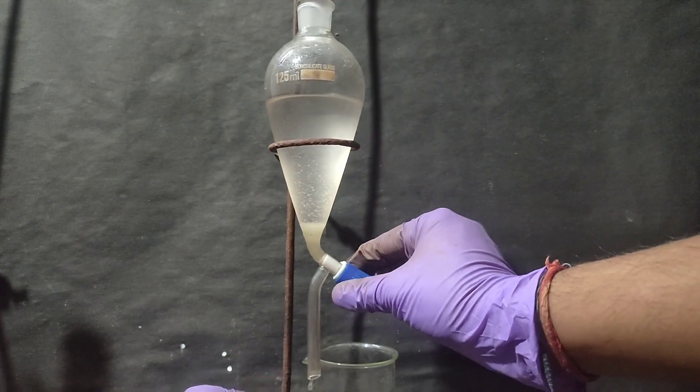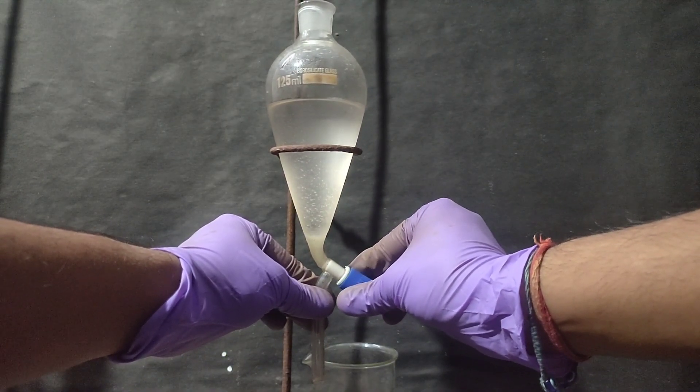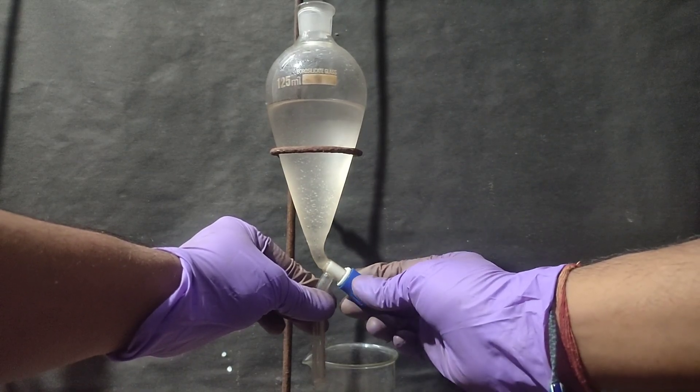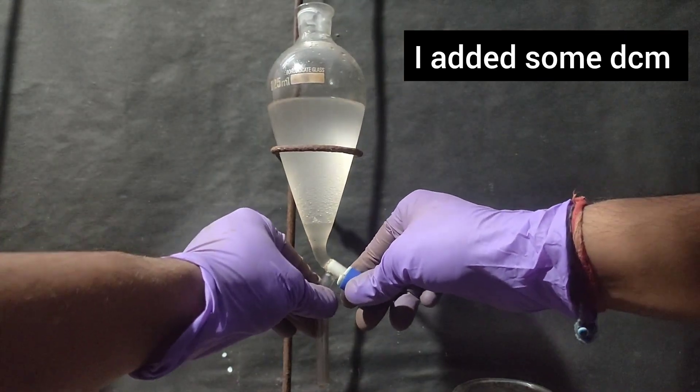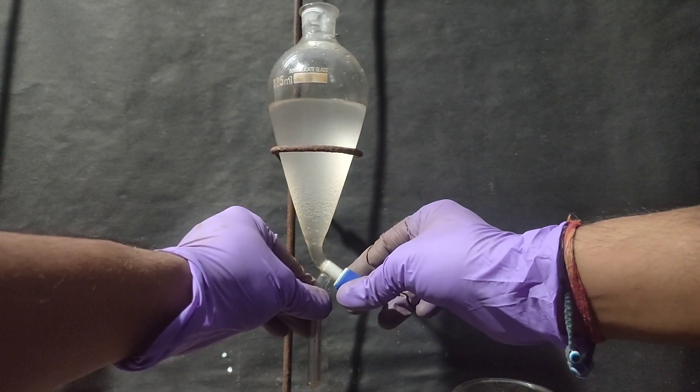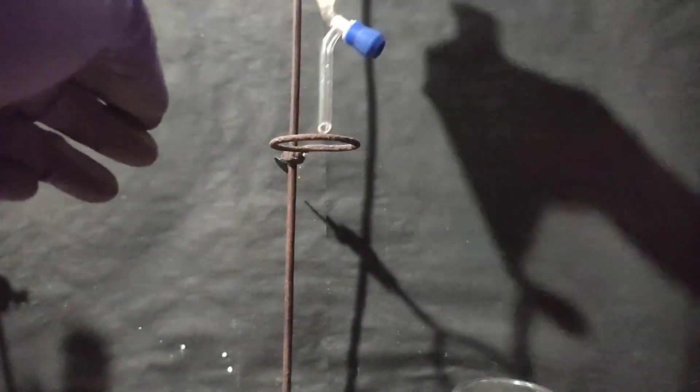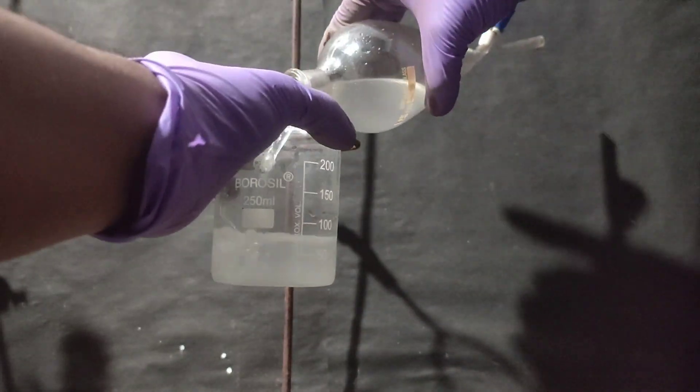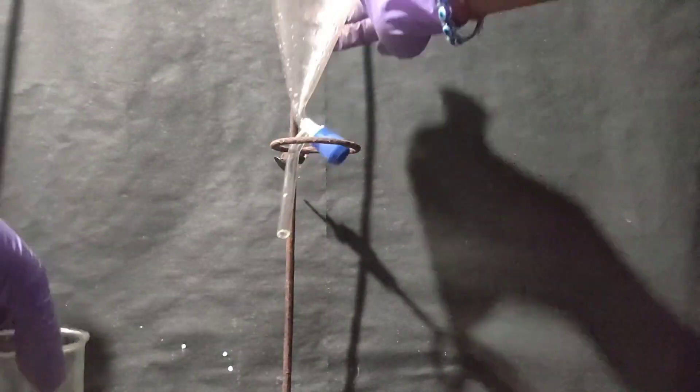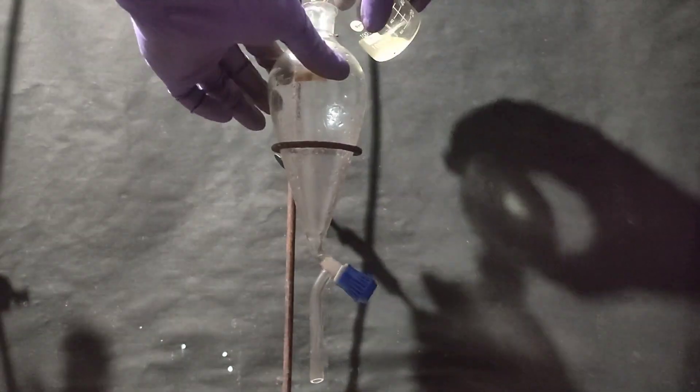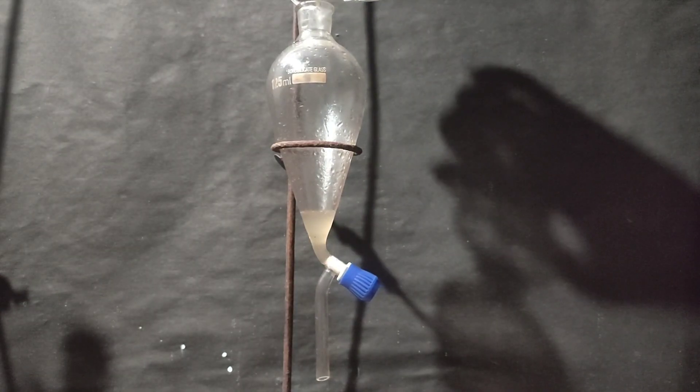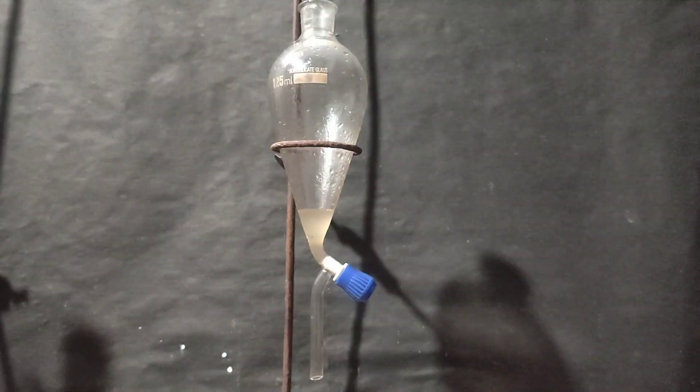I drained the aqueous layer. Then to the aqueous layer, I added some DCM to extract remaining TNG or trinitroglycerin. Shook it, let it settle and drained it in the same beaker. Then I transferred the aqueous layer to the first beaker.